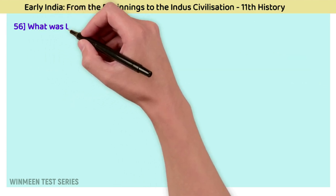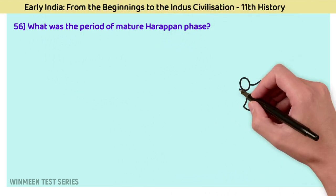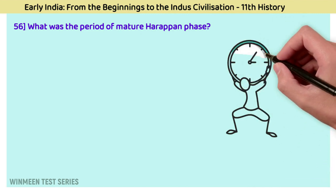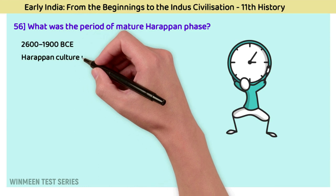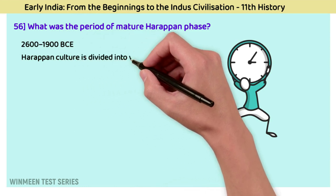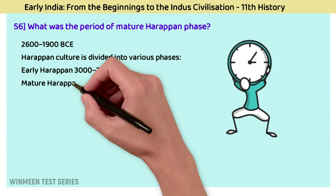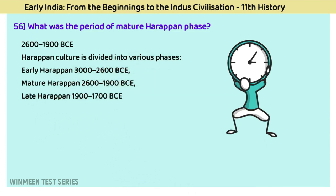Question 56: What was the period of the Mature Harappan phase? The answer is 2600 to 1900 BCE. Harappan culture is divided into Early Harappan (3000 to 2600 BCE), Mature Harappan (2600 to 1900 BCE), and Late Harappan (1900 to 1700 BCE).